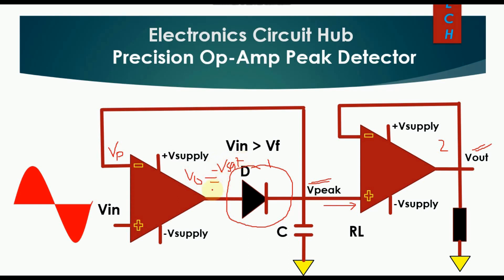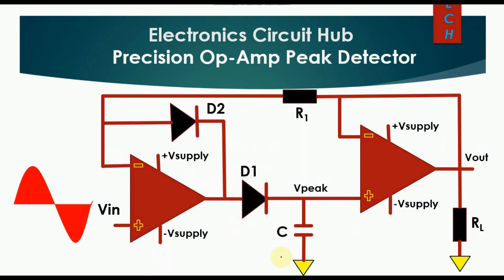V-naught equals minus V-sat. Whenever your input signal again tries to exceed V-peak, since the op-amp is in negative saturation, it will not respond fast enough. At that point of time, you may not be able to charge your capacitor to the peak value. This also depends on the slew rate of the operational amplifier, the conduction time of the diode, and the charging time of the capacitor.